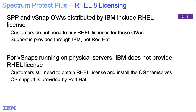Now, if you did have some physical infrastructure in your environment and were running vSnaps on that physical infrastructure, then your licensing would not change. You should have had a license from Red Hat to run Red Hat Enterprise Linux — that will continue as is, and your OS support will be provided by Red Hat.